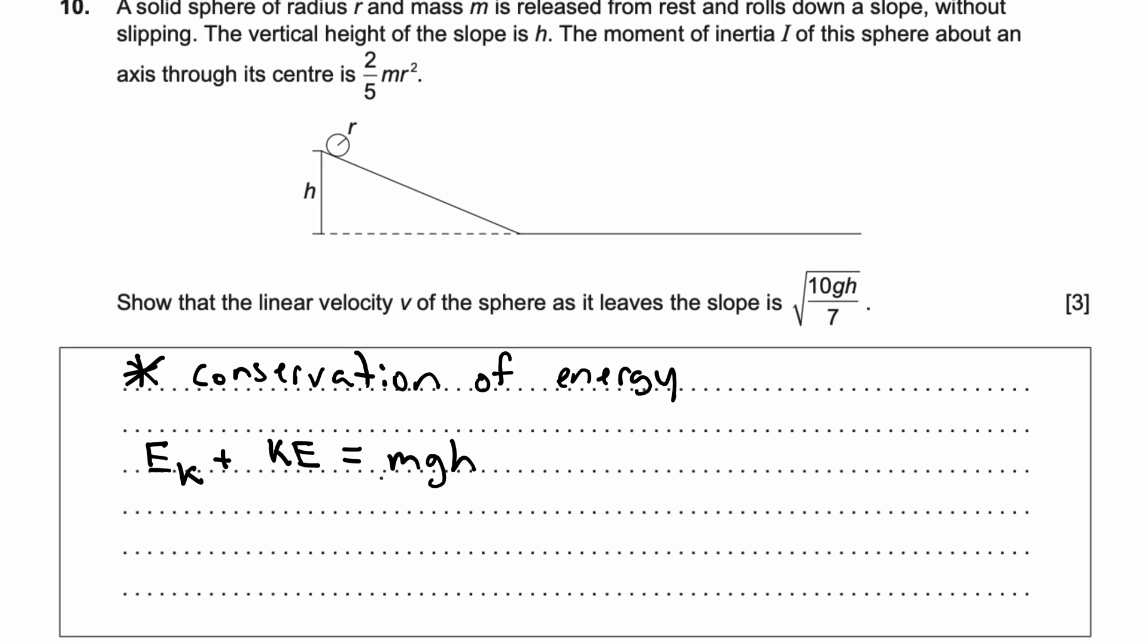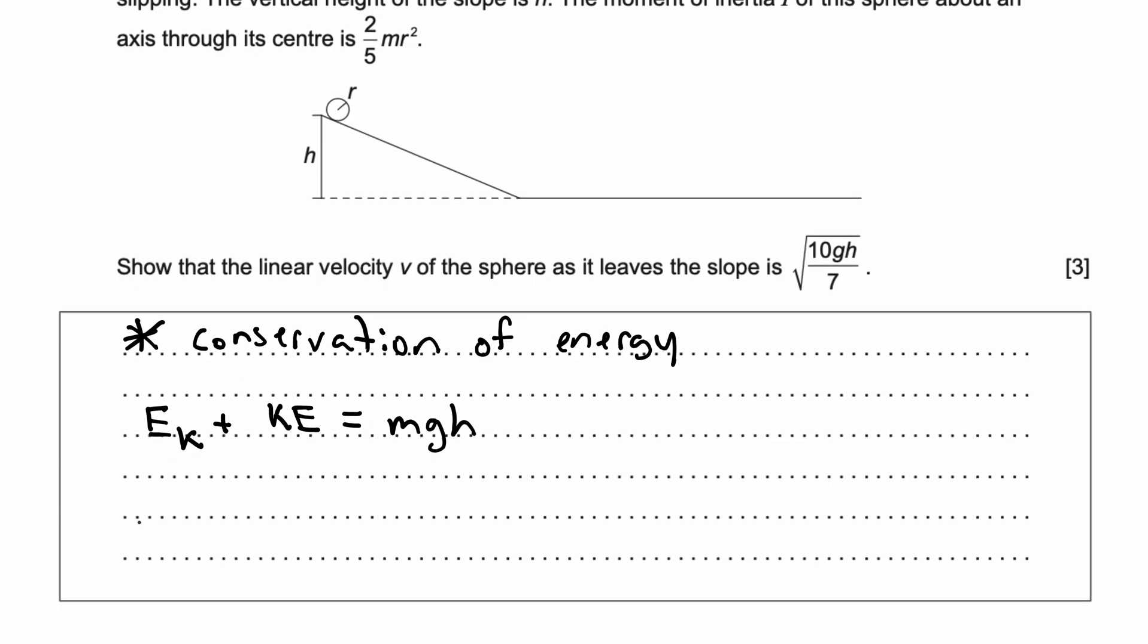So let's solve this question using this principle. The formula for rotational kinetic energy is given in your formula booklet. It is ½Iω², where I is the moment of inertia and ω is your angular velocity, plus